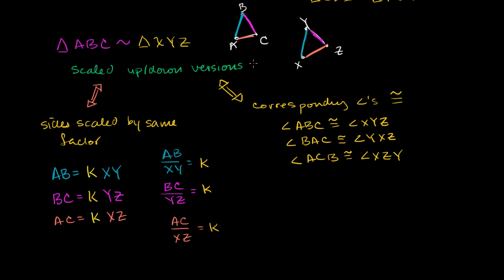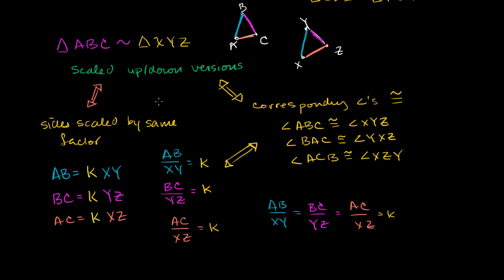In other words, ab/xy equals bc/yz equals ac/xz, which all equal the same scaling factor k. So similar triangles means they're scaled up versions of each other — you can also flip, rotate, or shift — which means all corresponding angles are congruent, and which also means the ratio between all corresponding sides is the same constant.